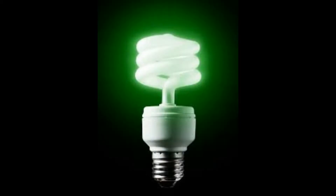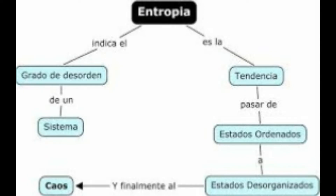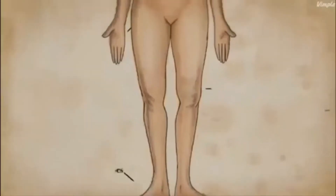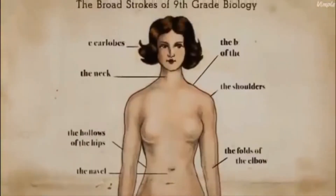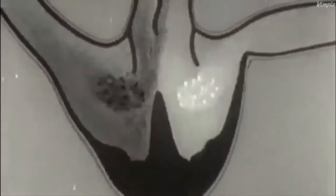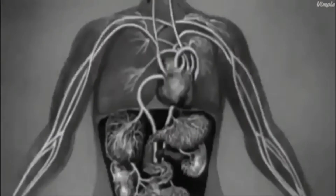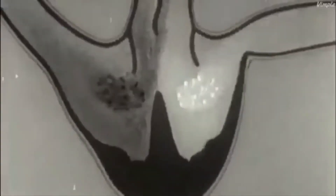El cuerpo humano tiene la peculiaridad de que su entropía es mínima, por eso es un sistema termodinámico inestable, lo que provoca su evolución permanente, es decir, la vida misma. Para que el organismo vivo pueda mantenerse en dicho estado, es necesario que elimine el exceso de entropía que se produce continuamente, inherente a los procesos vitales como la circulación de la sangre, la respiración, etc.